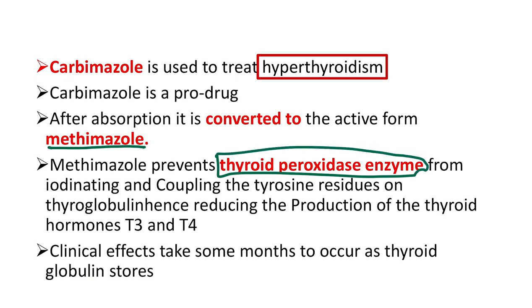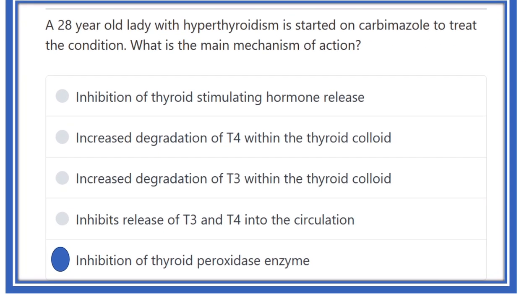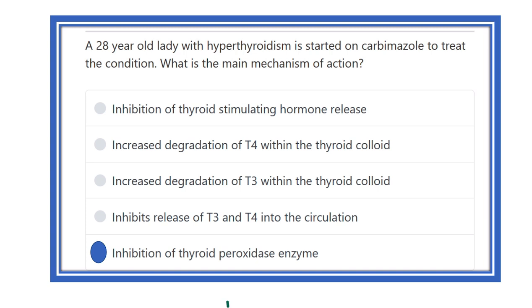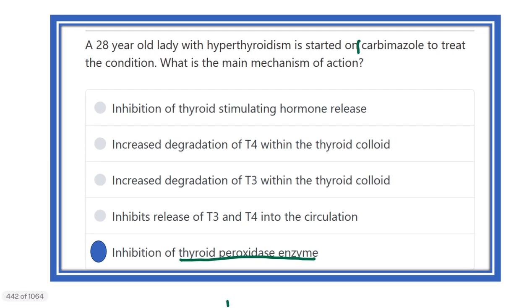There are different types of enzymes in the thyroid gland, and one of them is thyroid peroxidase enzyme. Carbimazole inhibits this thyroid peroxidase enzyme. It acts on the thyroid gland by inhibiting thyroid peroxidase — not other options such as thyroid stimulating hormone, which is not correct.